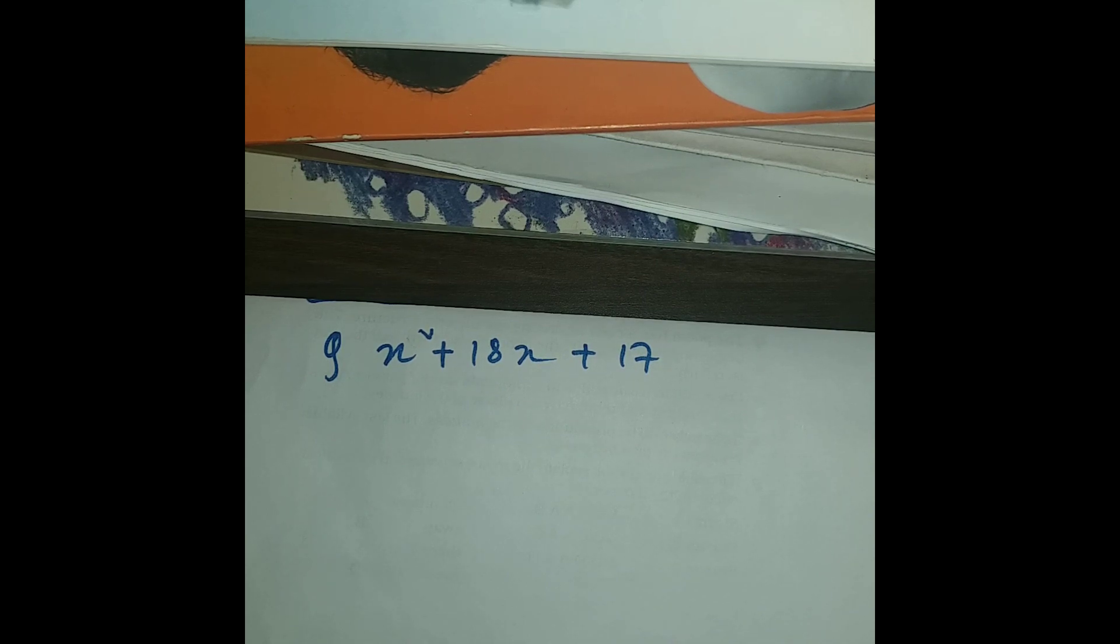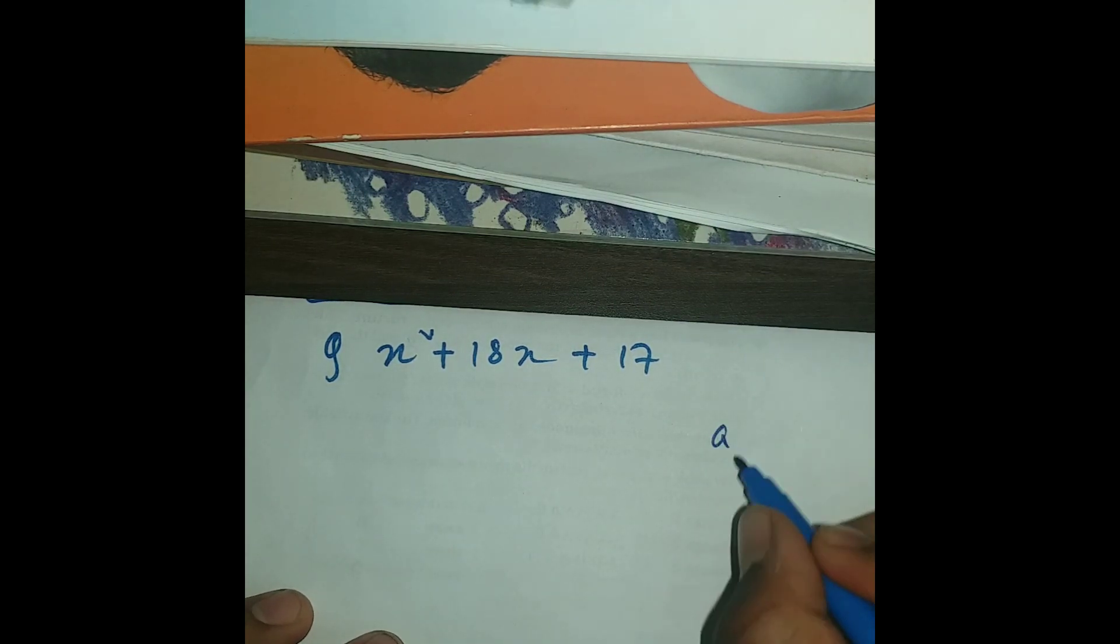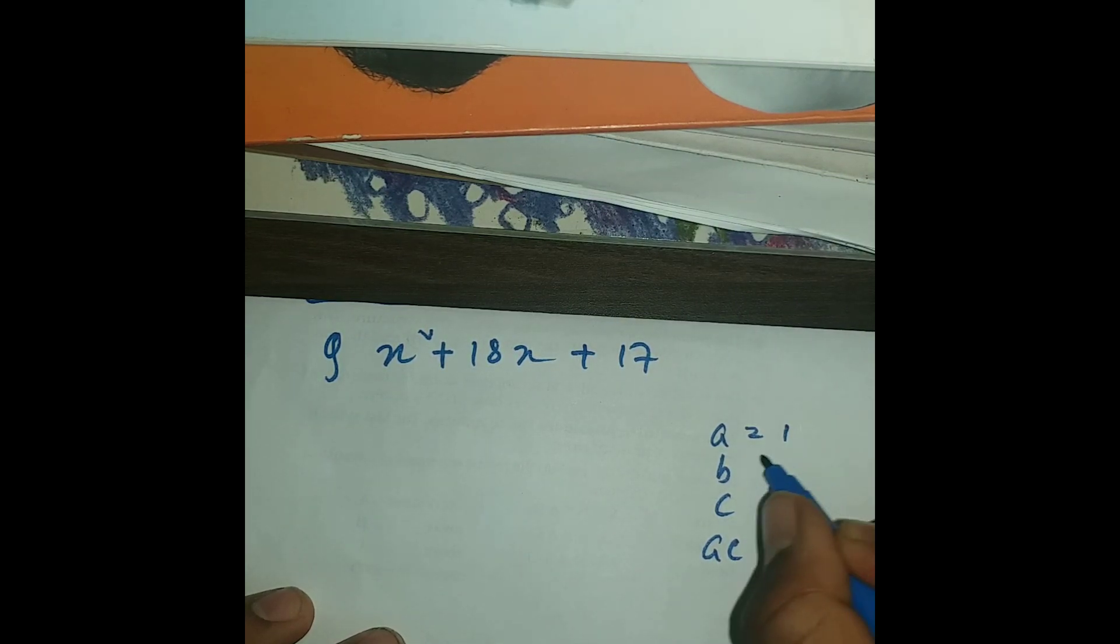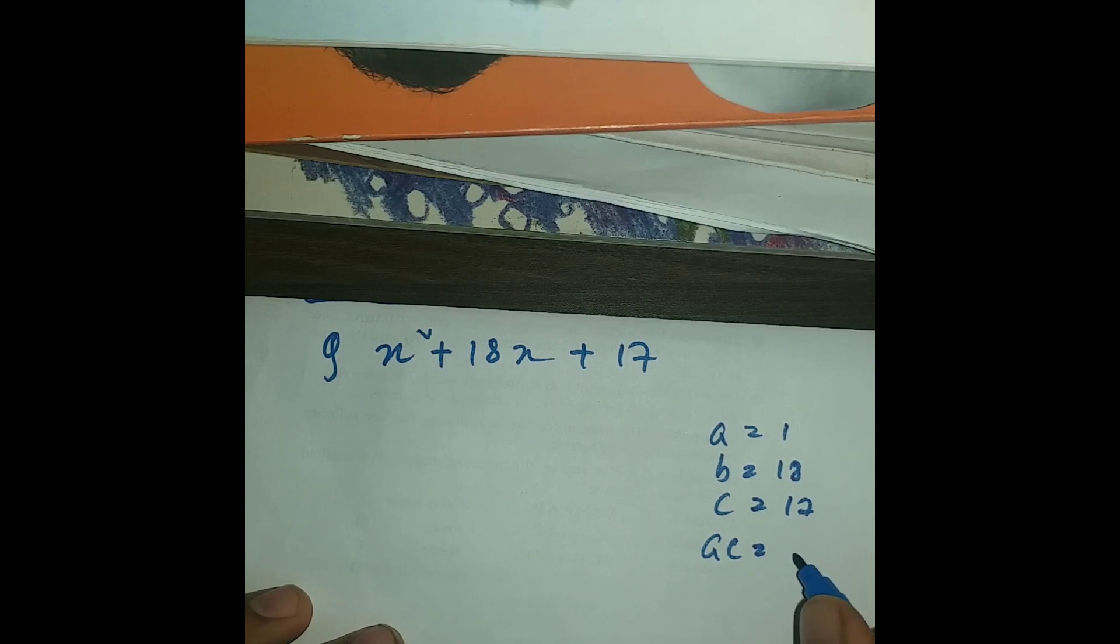Here we can see we're gonna do this question by middle term splitting. It's already in the form. So we're gonna write a, b, c, ac. a is 1, b is 18, c is 17, and ac is 17 into 1 which is 17.